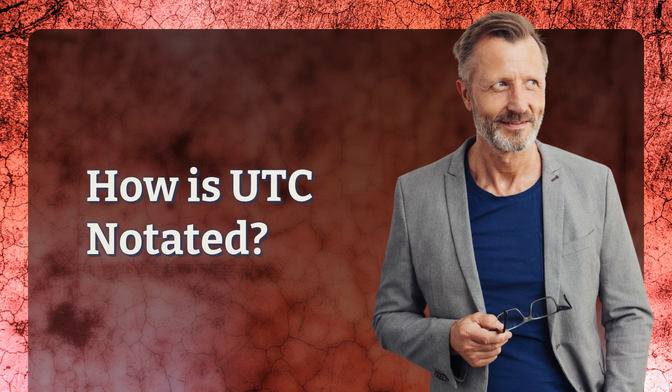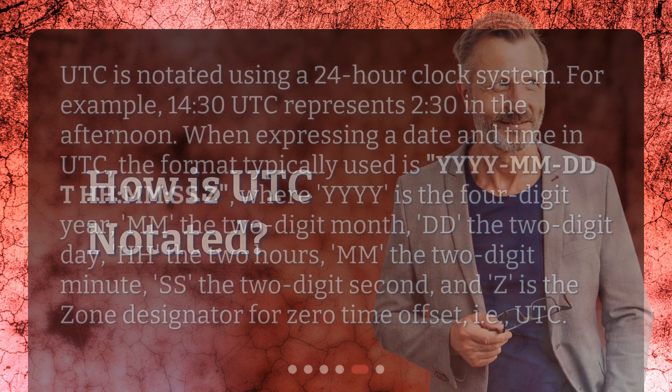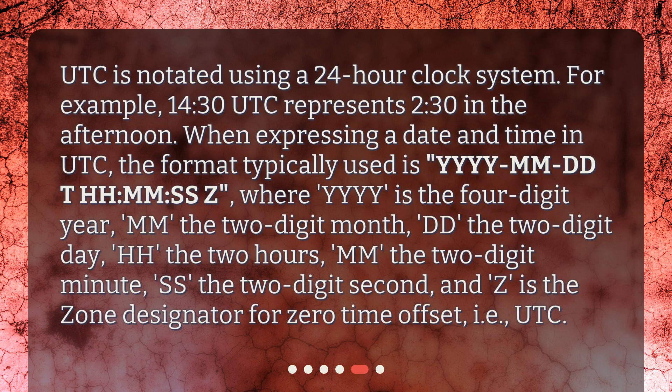How is UTC notated? UTC is notated using a 24-hour clock system. For example, 14:30 Coordinated Universal Time represents 2:30 in the afternoon. When expressing a date and time in UTC, the format typically used is YYYY-MM-DDTHH:MM:SSZ,